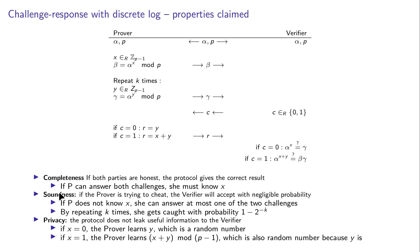For soundness: if the prover is trying to cheat and doesn't know X, she can answer only one of the two challenges. So she will be caught in each round with probability 50%. By repeating the protocol K times she gets caught with probability overwhelmingly close to one. So the soundness condition is also satisfied.